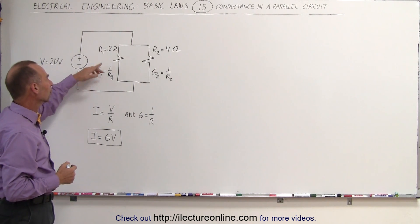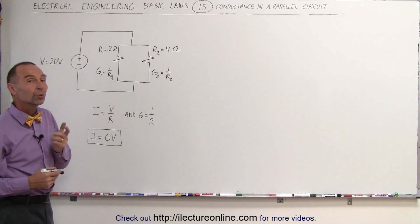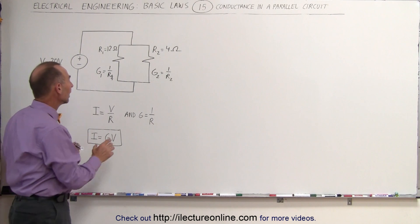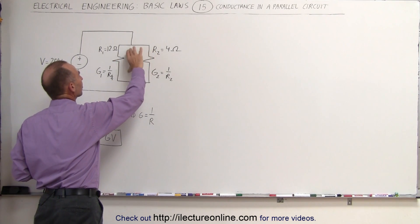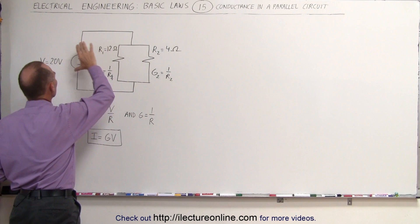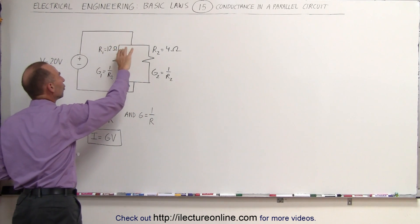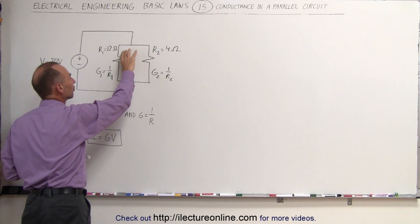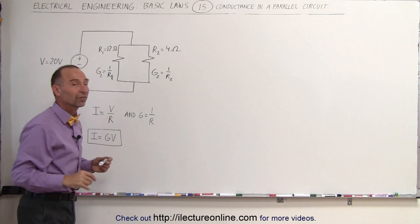If we now want to calculate the current in each of the two branches, we can do it as follows. We realize that the voltage across each branch is equal in a parallel branch. And in this case, the 20 volts across the source must also equal the 20 volts across the first branch and the 20 volts across the second branch.